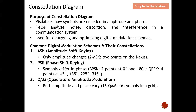The purpose of the constellation diagram is to make it easy to visualize how to decode amplitude and phase. Based on the points on the constellation diagram, you can interpret the symbol intended for transmission. Besides showing the symbol, the constellation diagram also helps us analyze the noise, distortion, and interference in a communication system. It is also used for debugging and optimizing the digital modulation scheme.